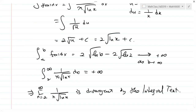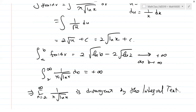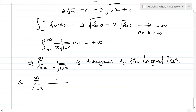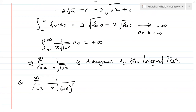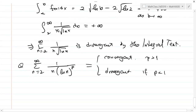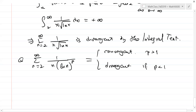More generally, for Σ1/(n(ln n)^p): if p > 1 it converges, if p < 1 it diverges. Here the power is 1/2 < 1, confirming divergence. Use the integral test for all such problems involving logarithms.